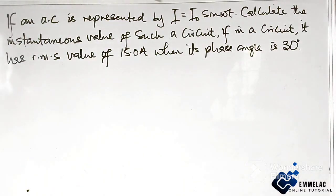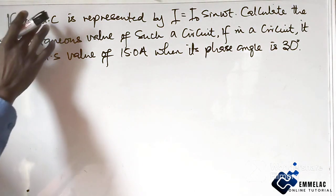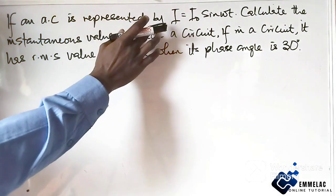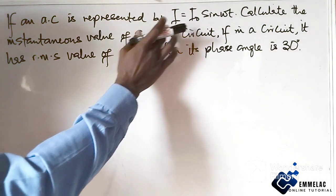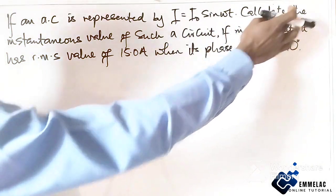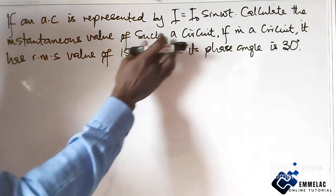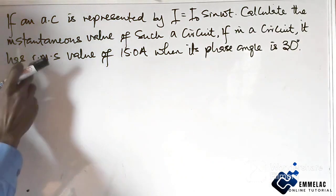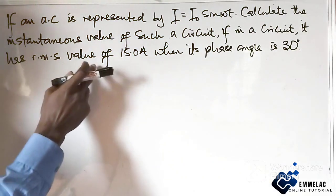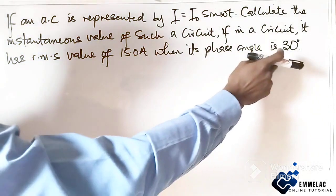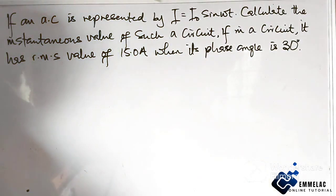Welcome to MLAC online tutorial. Before us is this question that says if an alternating circuit is represented by this equation, calculate the instantaneous value of such a circuit if in a circuit it has the root mean square value of 15.0 ampere when its phase angle is 30 degrees.